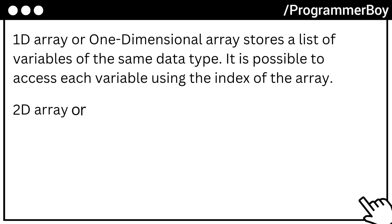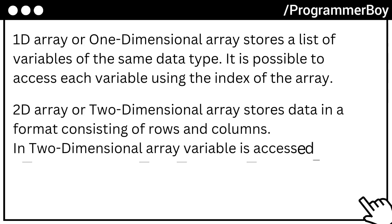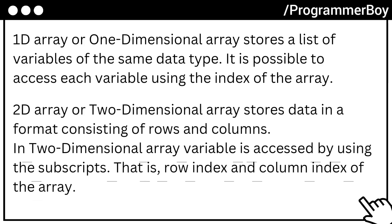Two-D array or two-dimensional array stores data in a format consisting of rows and columns. In two-dimensional array, variable is accessed by using the subscripts, that is, row index and column index of the array.